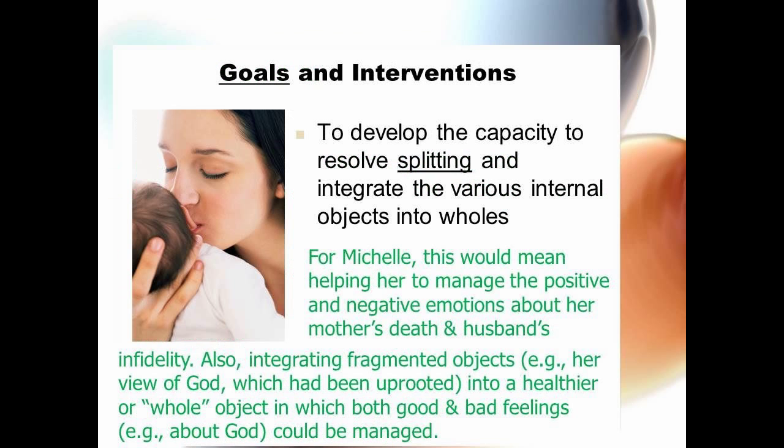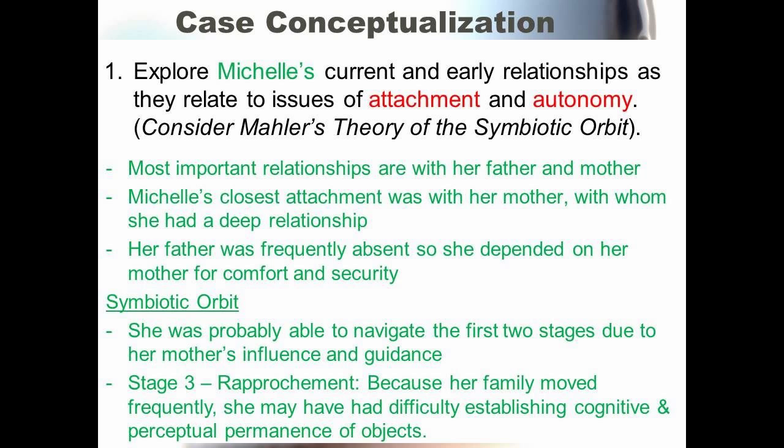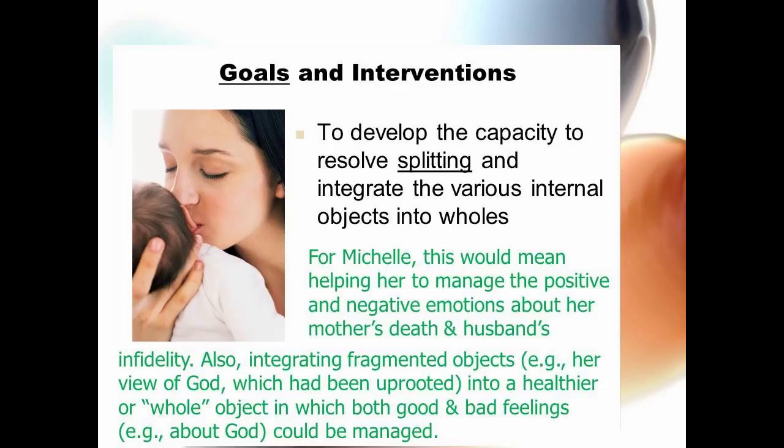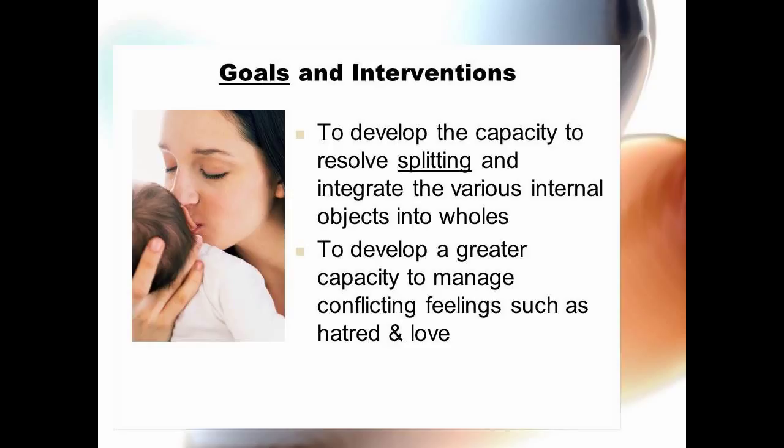The main goals of object relations therapy are to develop the capacity to resolve splitting and to integrate the various internal objects into wholes. In Michelle's case, this would mean helping her to manage the positive and negative emotions about her mother's death and her husband's infidelity. Also, integrating fragmented objects such as her view of God into a healthier whole object in which both good and bad feelings could be managed and tolerated. By doing this, she would develop a greater capacity to manage conflicting feelings such as hatred and love, and could return to a place of loving God when both good and bad things happen. Ultimately, our goal is to restore the healthy object relations in the client's life.